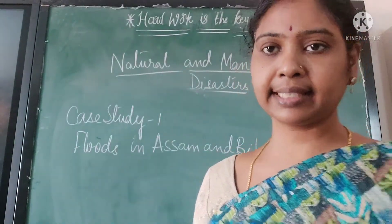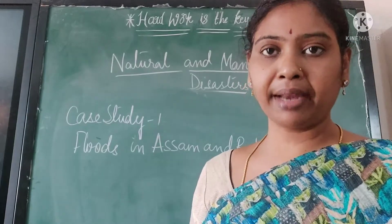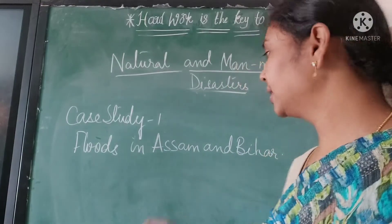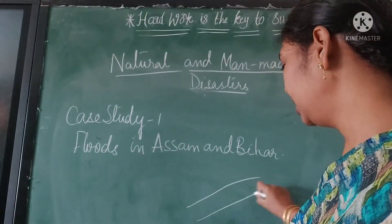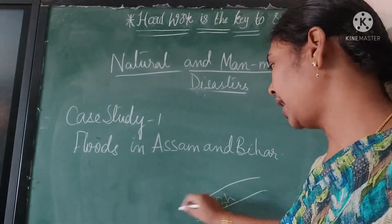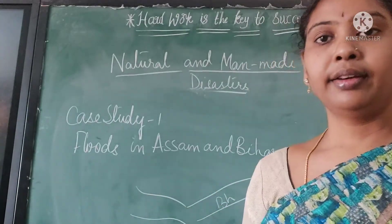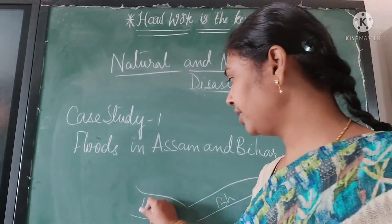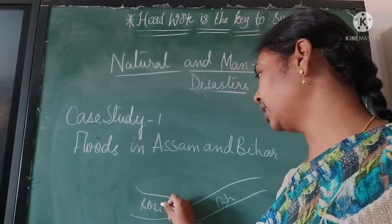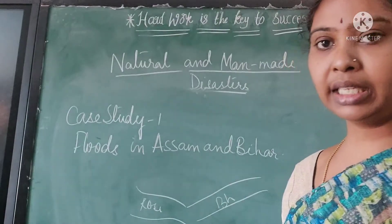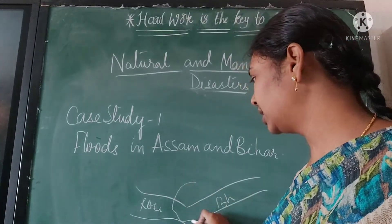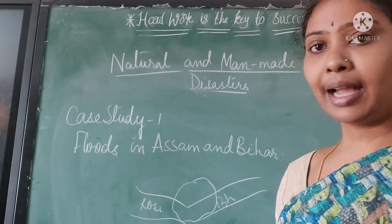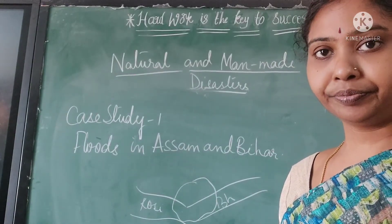Now we are going to see the first case study: floods in Assam and Bihar. This is caused by two rivers — the Brahmaputra River on one side and the Kosi River, a tributary of the Ganga, on the other side. These two rivers cause a lot of flooding near Assam and Bihar.